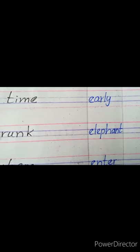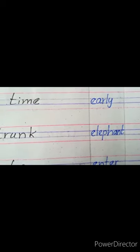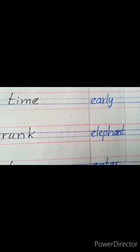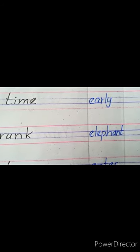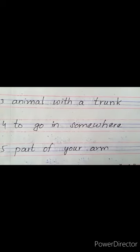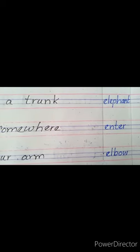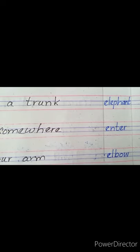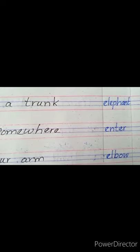Third one is 'animal with a trunk'. اب وہ جانور جس کا سونٹ ہوتا ہے اس کو کیا کہتے ہیں — elephant. صحیح ہے نا — elephant بھی E سے start ہوتا ہے. Fourth one is 'to go in somewhere' — جب آپ کہیں پر داخل ہوتے ہو، تو اس کو English میں کہتے ہیں 'enter' — E-N-T-E-R.